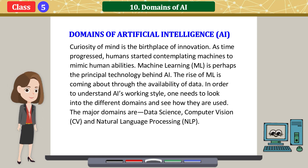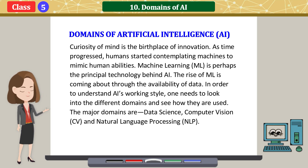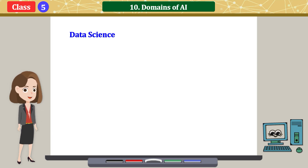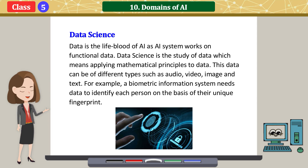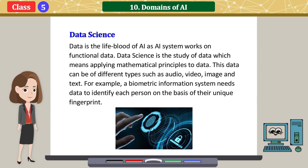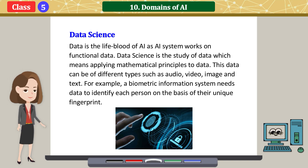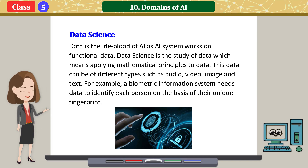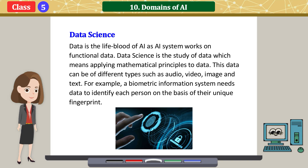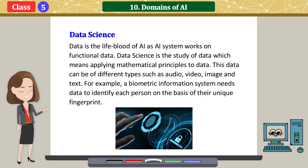The major domains are Data Science, Computer Vision, and Natural Language Processing. Data is the lifeblood of AI, as an AI system works on functional data. Data Science is the study of data, which means applying mathematical principles to data. This data can be of different types such as audio, video, image, and text. For example, a biometric information system needs data to identify each person on the basis of their unique fingerprint.